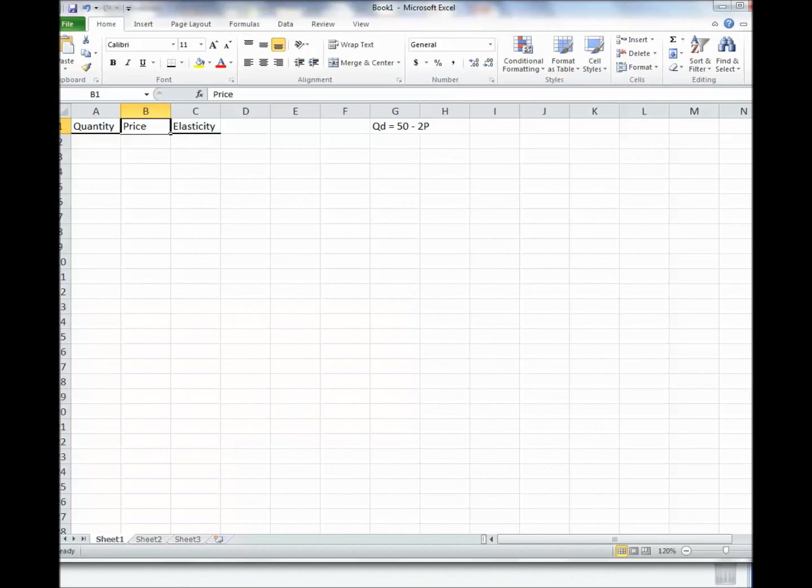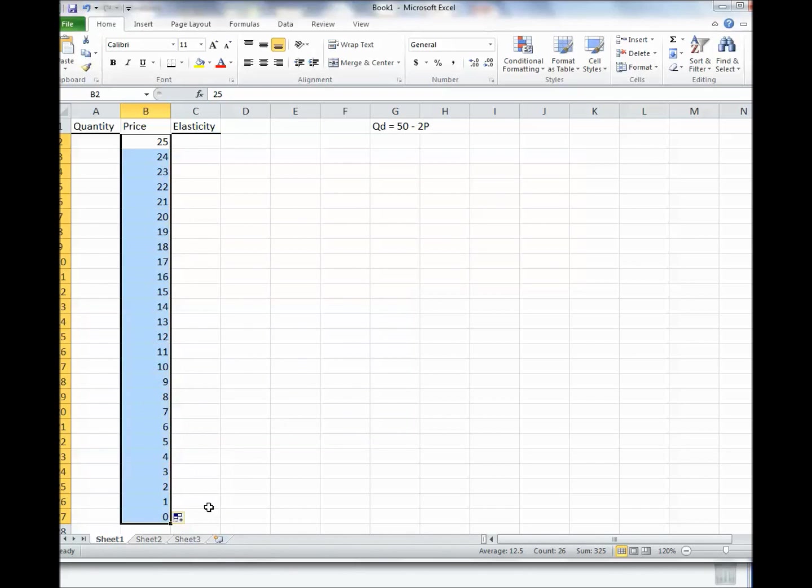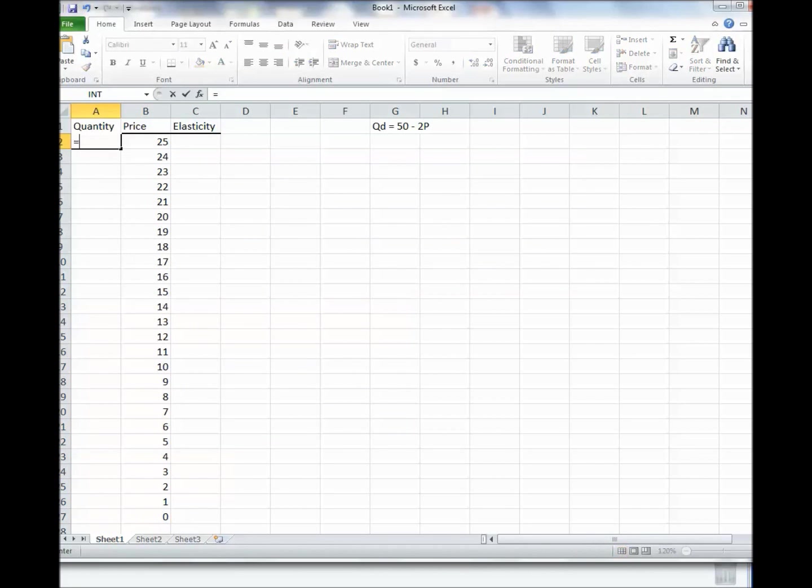Yeah. Can you see that? So I have an equation, QD equals 50 minus 2P. Let me just put in some values for P. Let's start with 25, 24, 23, something like that. Just get all the way down to 0. All right. So there are my P values. Now let's find the quantities that go with that.